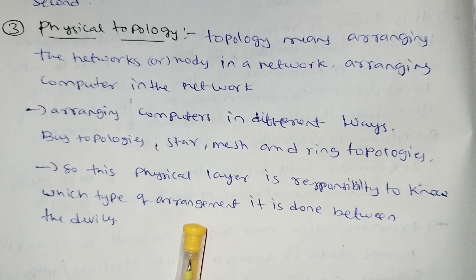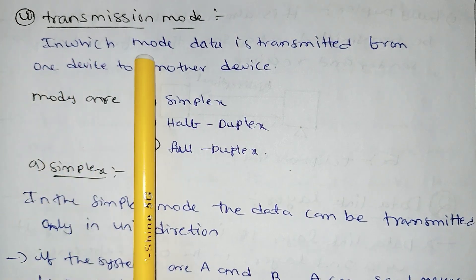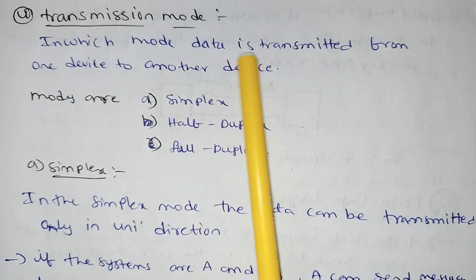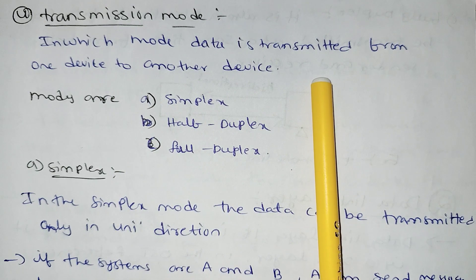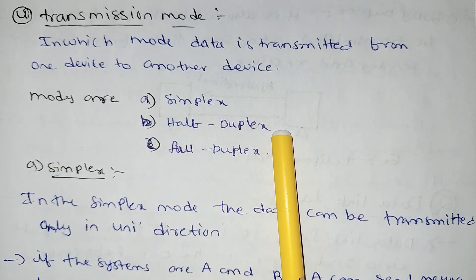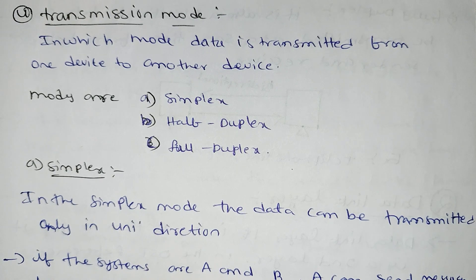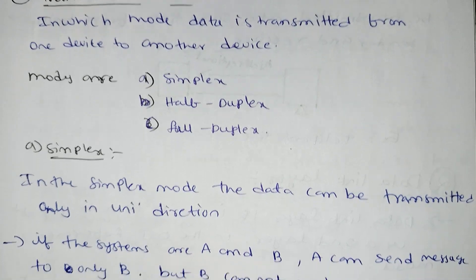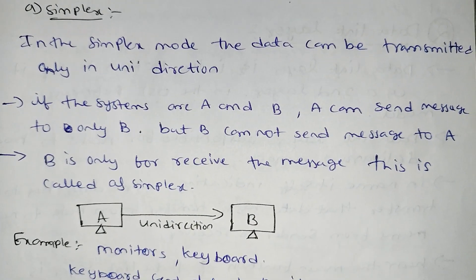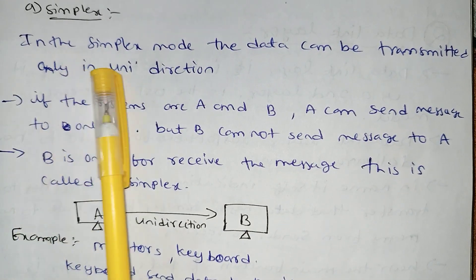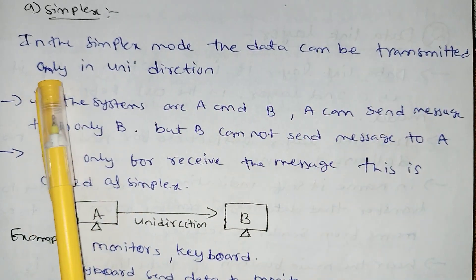The next function is transmission mode — the mode in which data is transmitted from one device to another. The modes are simplex, half duplex, and full duplex. In simplex mode, data can be transmitted only in one direction — for example, system A can send the message to B, but B cannot send back to A.